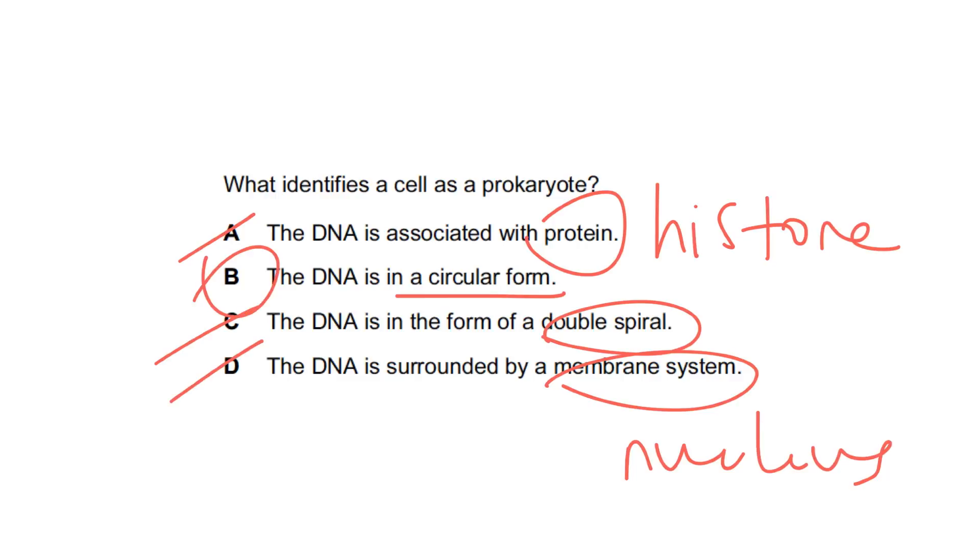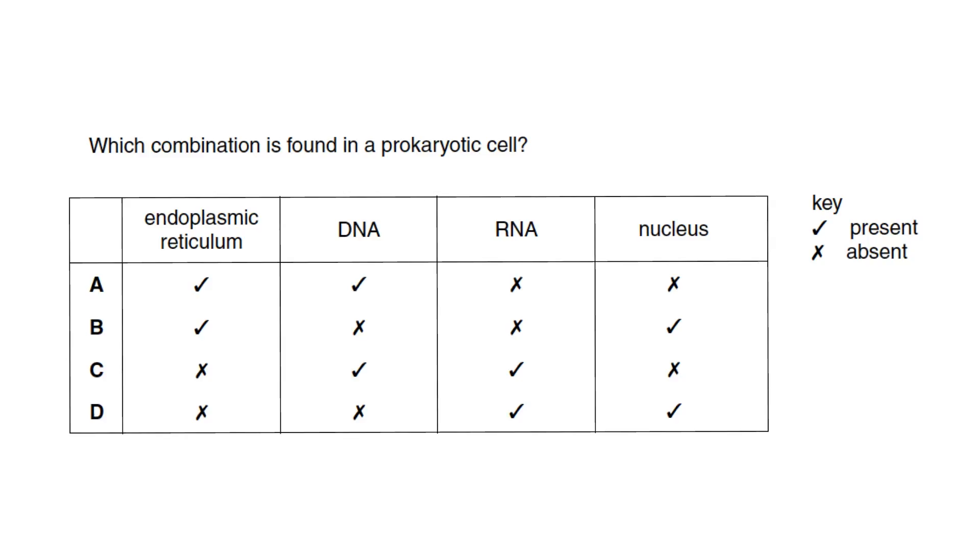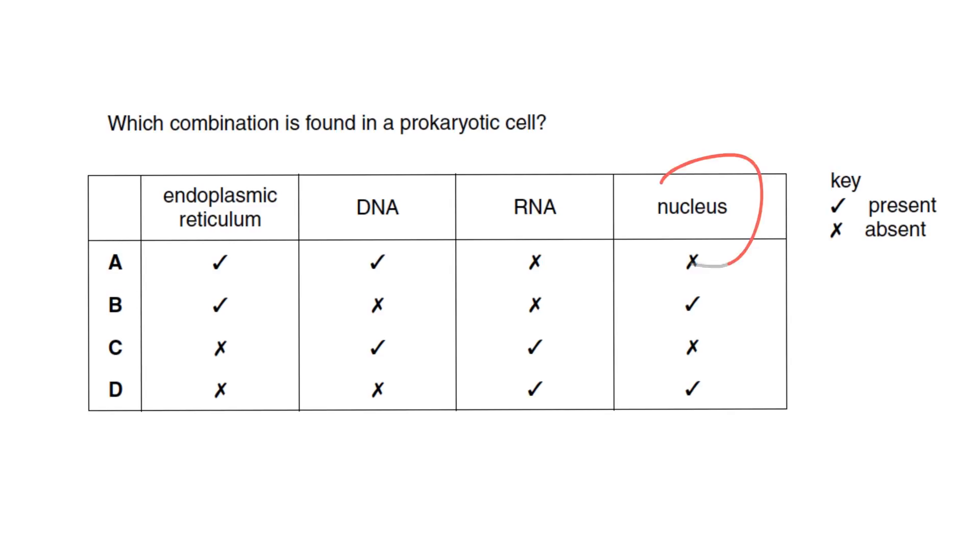Which combination is found in a prokaryotic cell? Use the method of elimination. Prokaryotic cells do not have a nucleus and no membrane-covered organelles. So A and B are off, and prokaryotic cells do not have a nucleus, so D is also off. The answer is C.